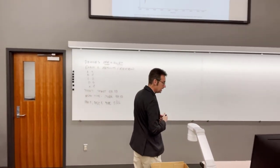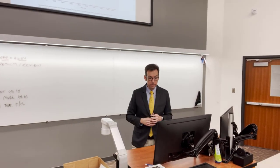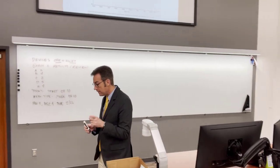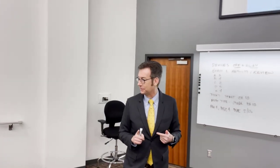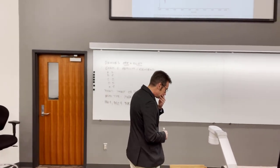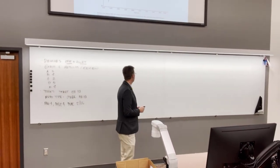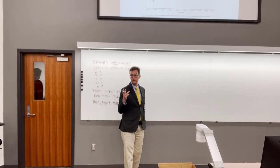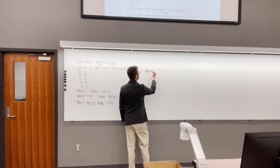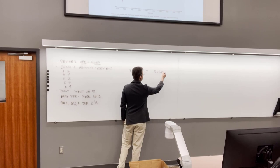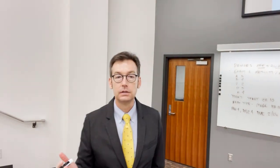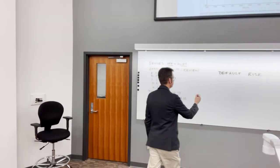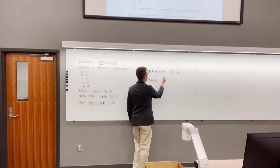The riskier something is, the higher up on the chart it's going to be — that makes the Treasury Bill the safest thing here. When you loan money to people, there are two risks you worry about: default risk, where they simply don't pay you back, and price or interest rate risk.